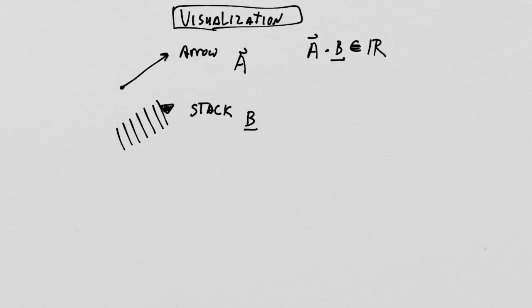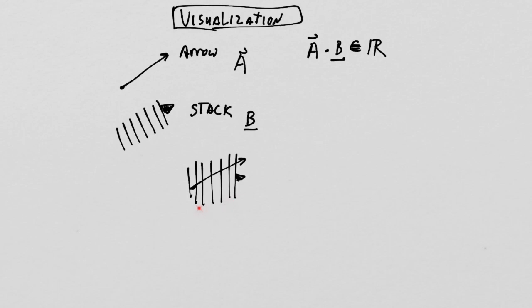What I forgot to mention — but it's really important — is this process. The reason it's so important is because if I expand or contract the coordinate system, the stack expands with the coordinate system and the arrow contracts. The real number you get won't change at all. It's invariant. And that is the secret to all of this.